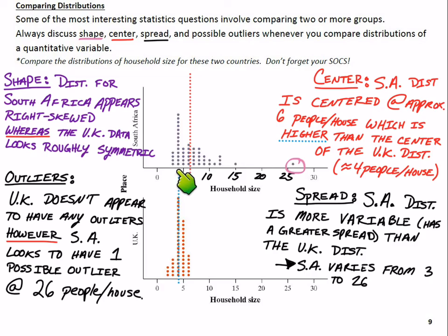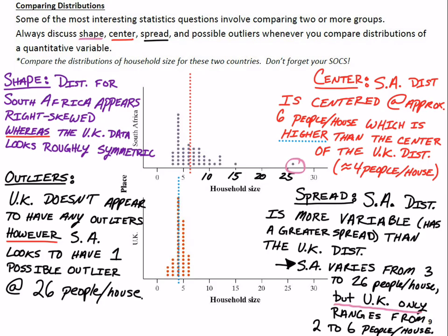We can say South Africa varies from, it looks like, 3, the lowest value, to this outlier up here at 26. So South Africa varies from 3 to 26. Let's give that some context. People per house. But, there's the comparative language. The UK only ranges from 2 to 6 people per house. Much tighter grouping for the UK distribution. We've emphasized comparative language in each one of these instances, shape, center, spread, and the outliers.